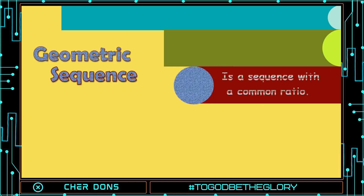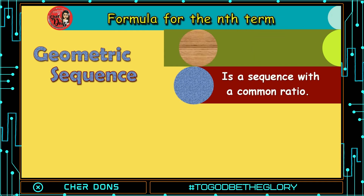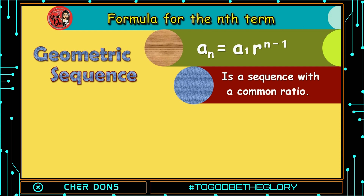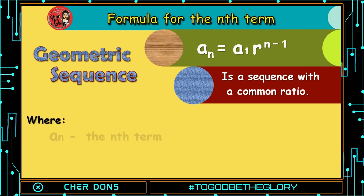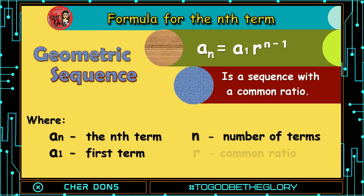Geometric sequence is a sequence with a common ratio. Here is the formula for finding the nth term of a geometric sequence: a sub n is equal to a sub 1 multiplied by r raised to n minus 1, where a sub n is the nth term, a sub 1 is the first term, n is the number of terms, and r is the common ratio.